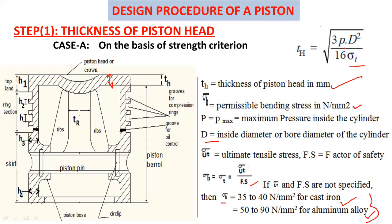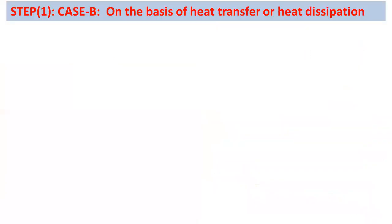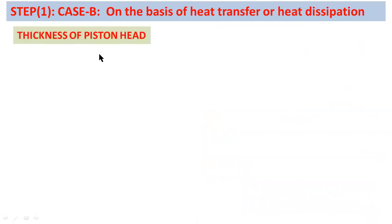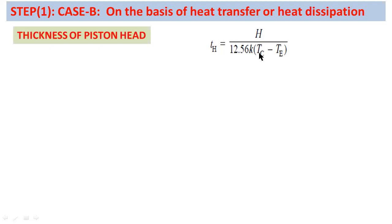For Case B — design on the basis of heat transfer — the thickness formula is: th = H / (12.56 × k × (tc − te)). The piston head should be such that the heat absorbed by the piston due to combustion of fuel is quickly transferred to the cylinder walls. Treating the piston head as a flat circular plate, this formula gives the required thickness.